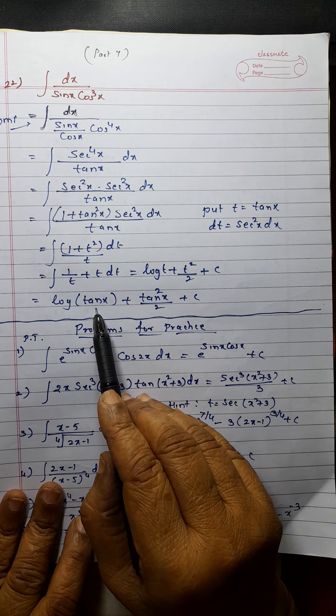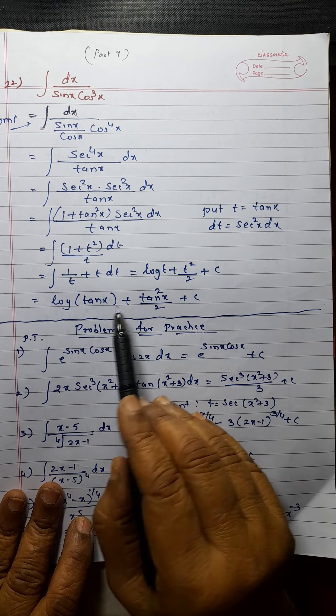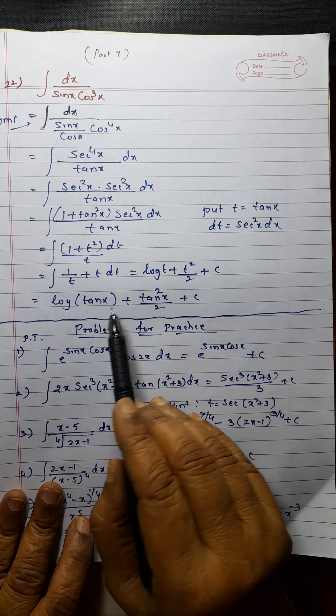Integration of t is t square by 2, plus c. Substitute back the value of t — don't simplify further, keep it as it is. This is your answer. Now here there are some practice problems. Hint is given, and somewhere answers are given. Here the hint is t equal to sec x square plus 3u — substitute.